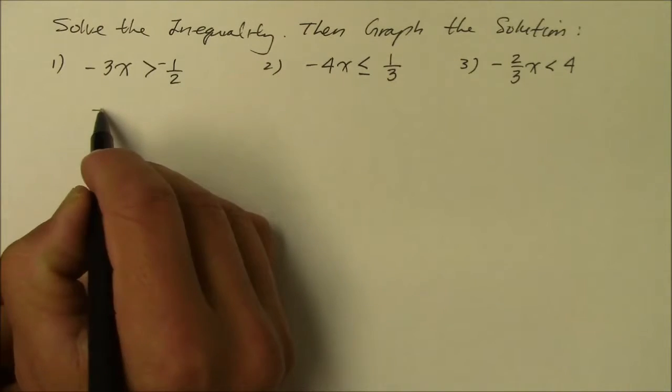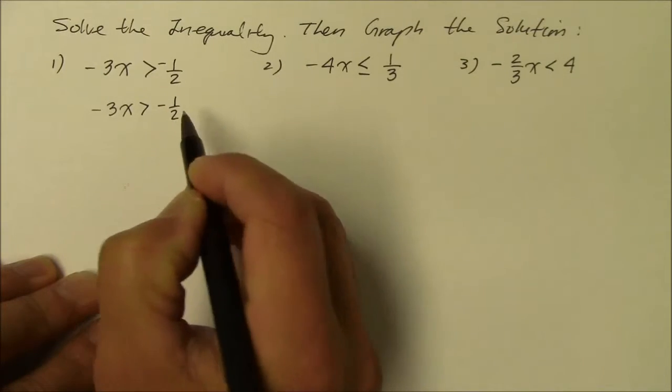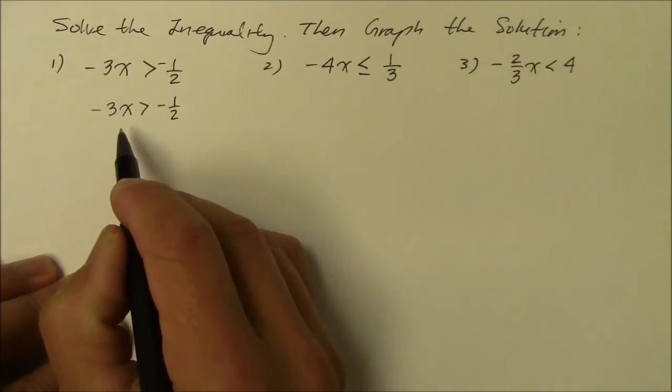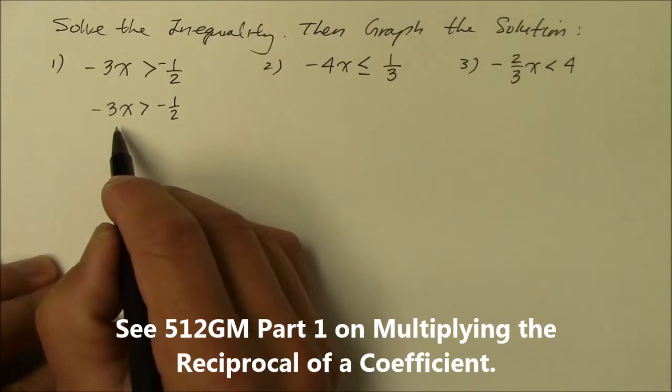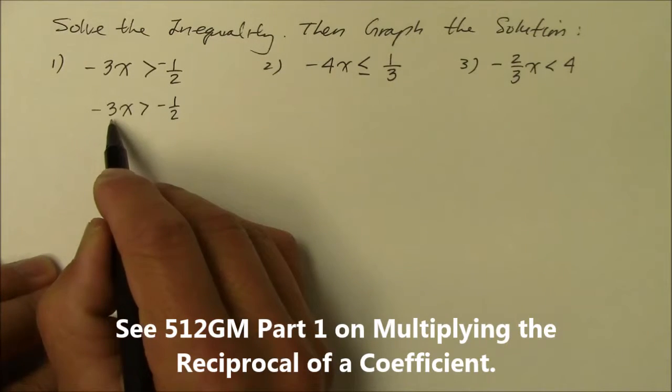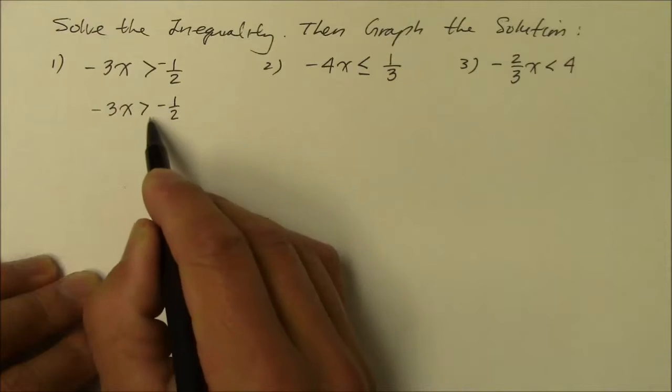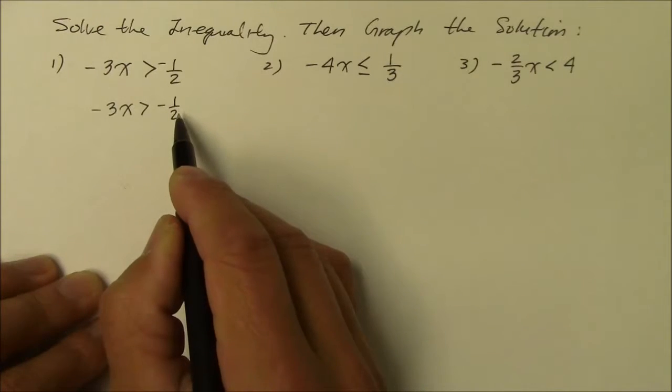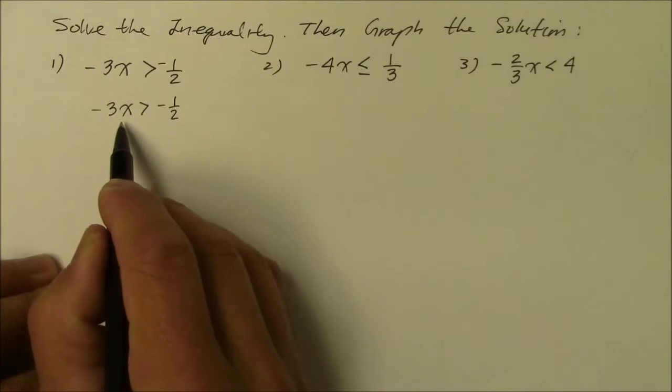Let me rewrite this. Negative 3x is greater than negative 1 over 2. To solve this, remember on the previous instructional video, I said multiply the reciprocal of the coefficient instead of dividing it. And here's the reason why. Sometimes you will have a constant on the right side that is already in fraction form. So that will look a little confusing, wouldn't it? If you try to divide a 3...